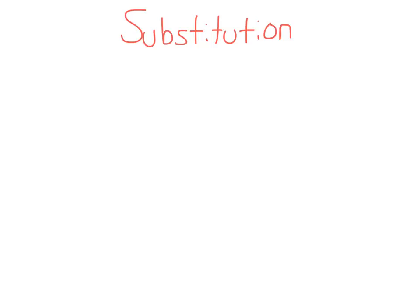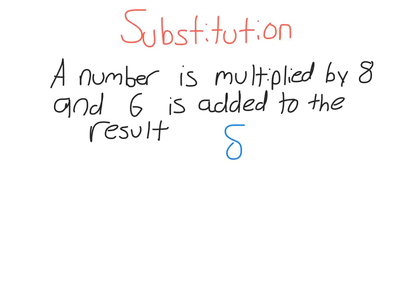I can write this sentence much more simply. I can just write it as 8 times an unknown number, which I call X, plus 6. We've been looking at things we can do with expressions or terms like this — we can multiply them, we can add them, and all sorts of things. Hopefully by the end of the year we can use these to solve equations and solve for unknown numbers. But that's how you'd write a sentence like that.